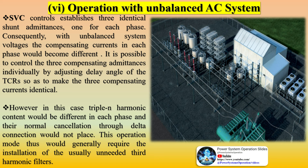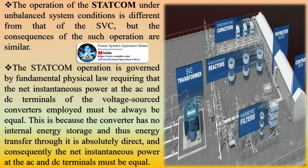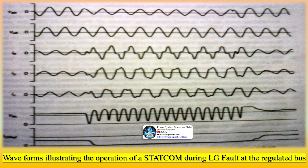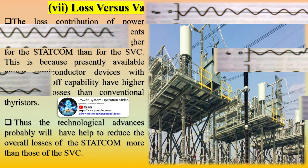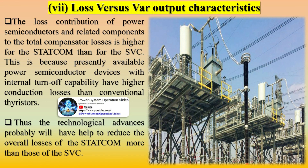The loss contribution of power semiconductors and related components to the total compensator losses is higher for the STATCOM than for the SVC. This is because presently available power semiconductor devices with internal turn-off capability have higher conduction losses than conventional thyristors. Technological advances will probably help to reduce the overall losses of the STATCOM more than those of the SVC. From the standpoint of physical installation, because the STATCOM not only controls but also internally generates the reactive output power, the large capacitor and reactor banks with their associated switchgear and protection used in conventional thyristor-controlled SVCs are not needed. This results in a significant reduction in overall size — about 30–40% — as well as installation labor and cost.